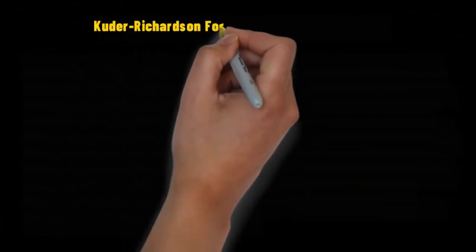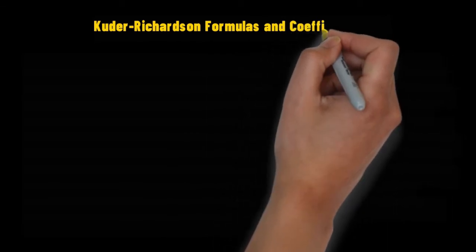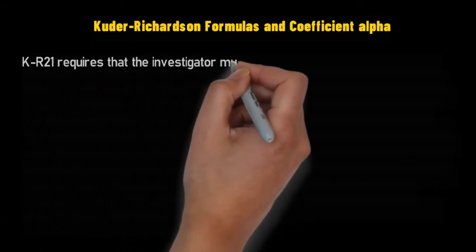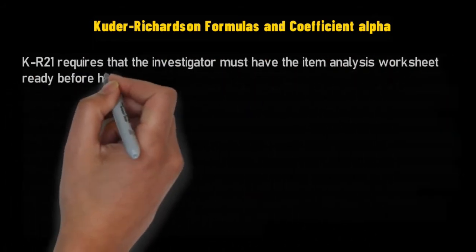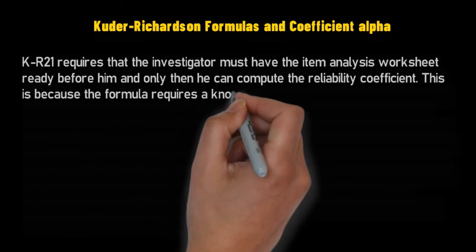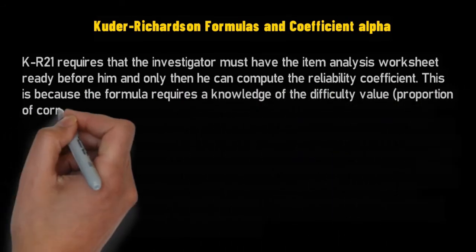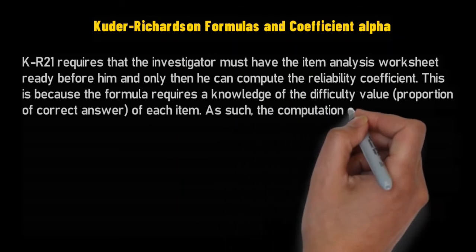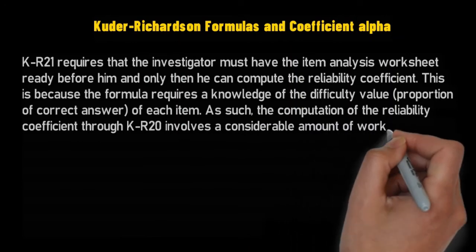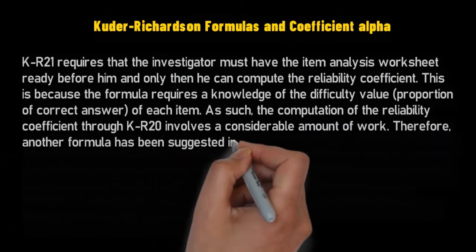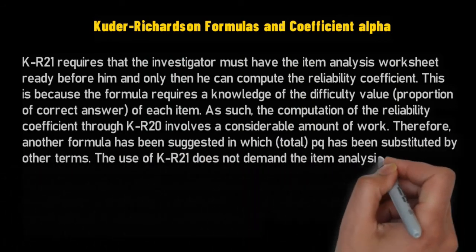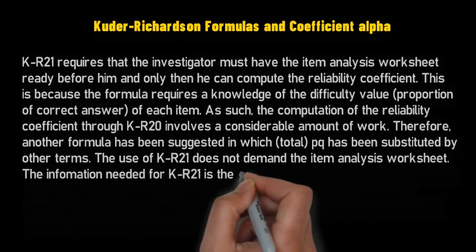Kuder Richardson formula KR20 requires that the investigator must have the item analysis worksheet ready before him and only then he can compute the reliability coefficient. This is because the formula requires knowledge of the difficulty value, proportion of correct answer of each item. As such the computation of the reliability coefficient through KR20 involves a considerable amount of work.